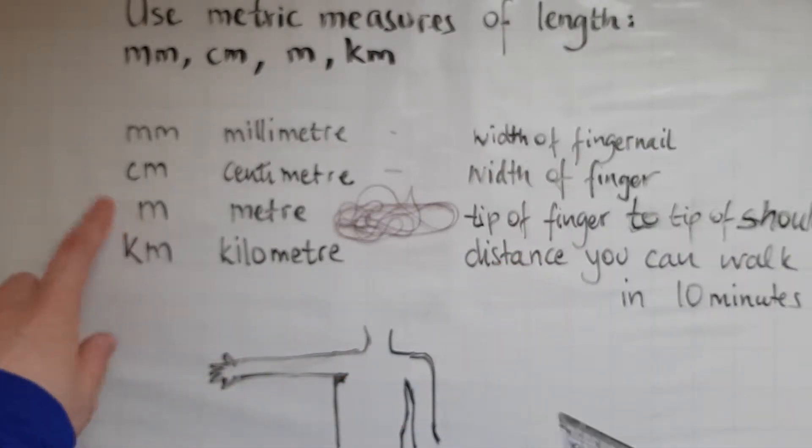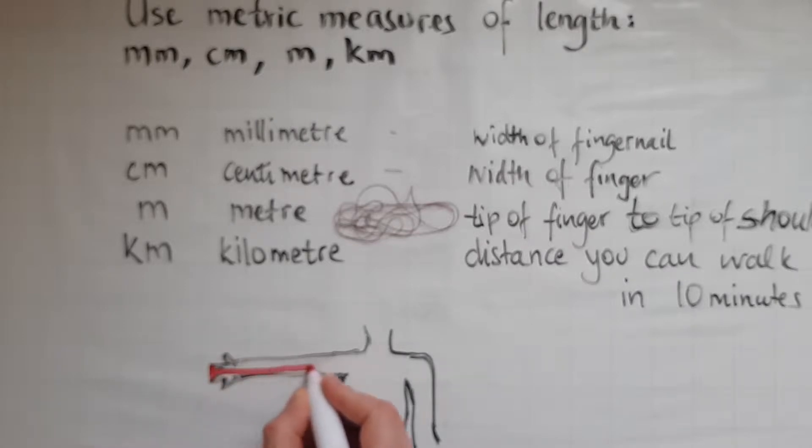Meter is a bigger unit that is about from the tip of the finger to the tip of the shoulder on the other side. So if you try and place a string, that's how long it is about.